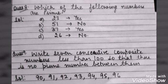Next, question number 8 is: which of the following are primes? 23 is a prime number because it has only the factors 1 and 23. 51 is not a prime number because it has more than 2 factors. 37 is again a prime number having 2 factors. And 26 is not a prime number because it has more than 2 factors.